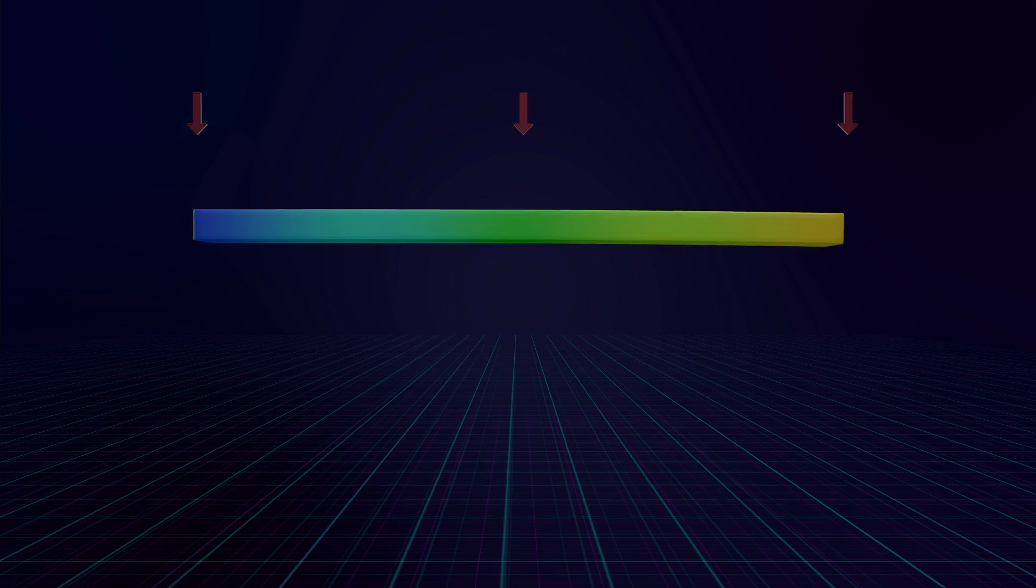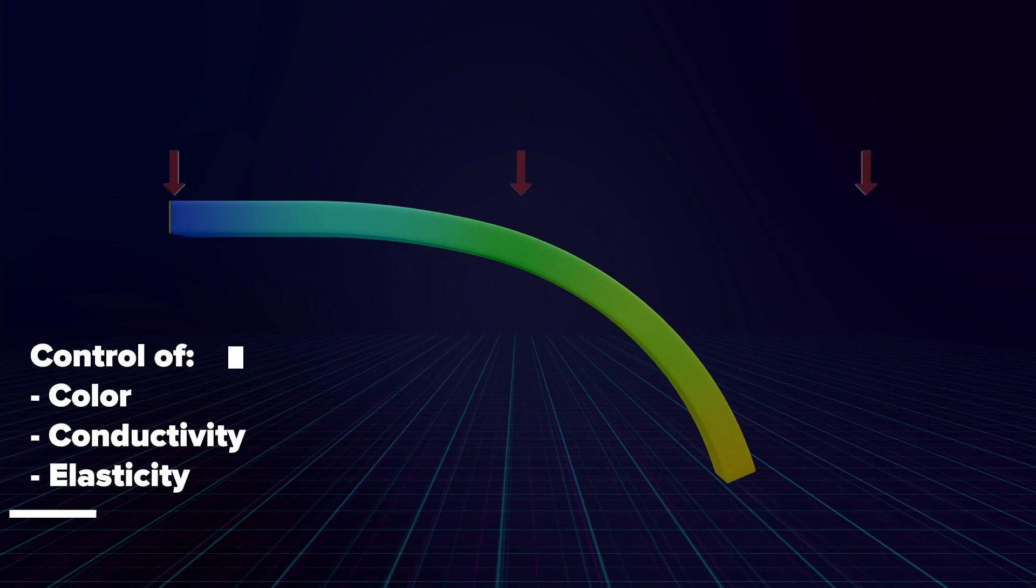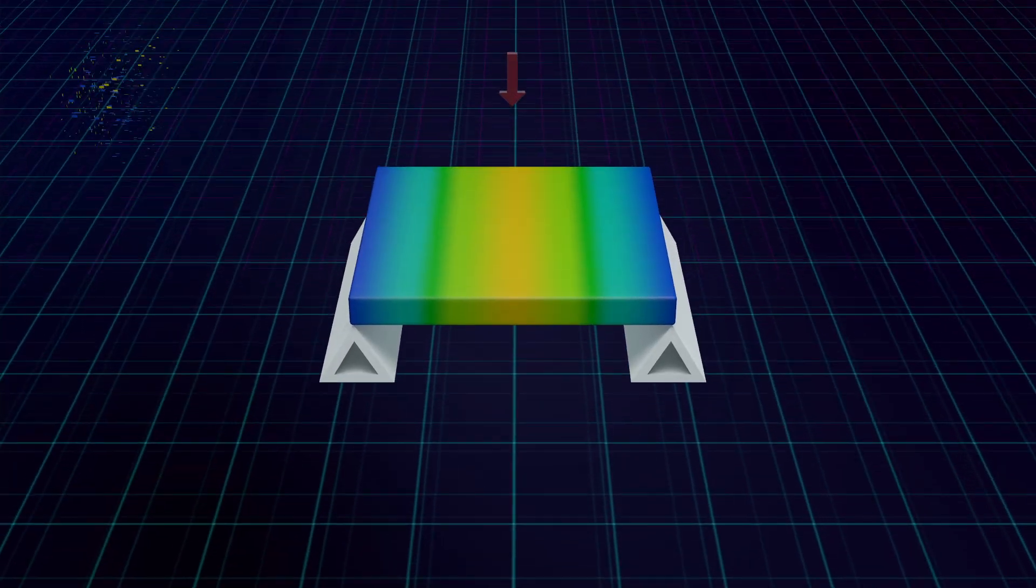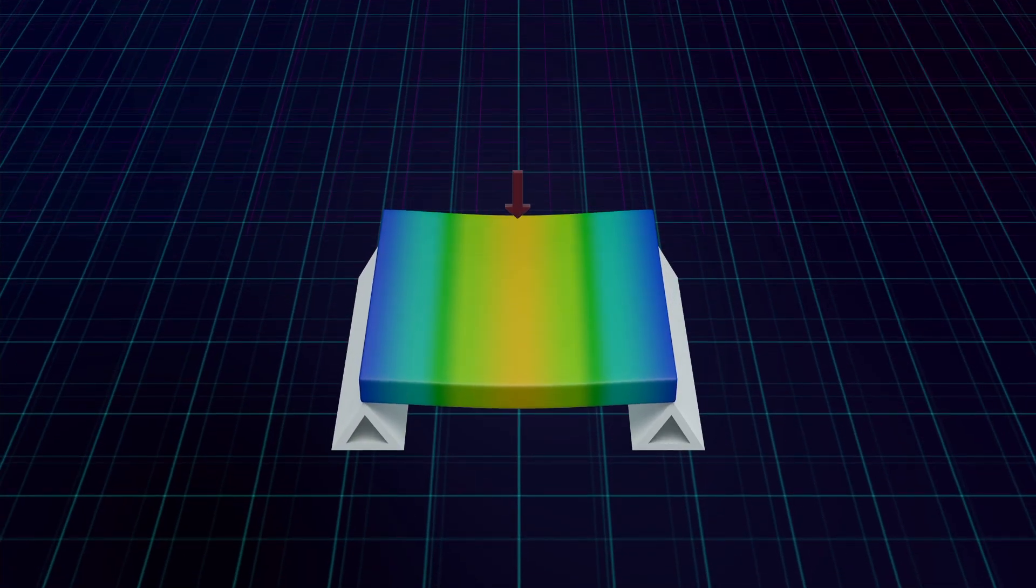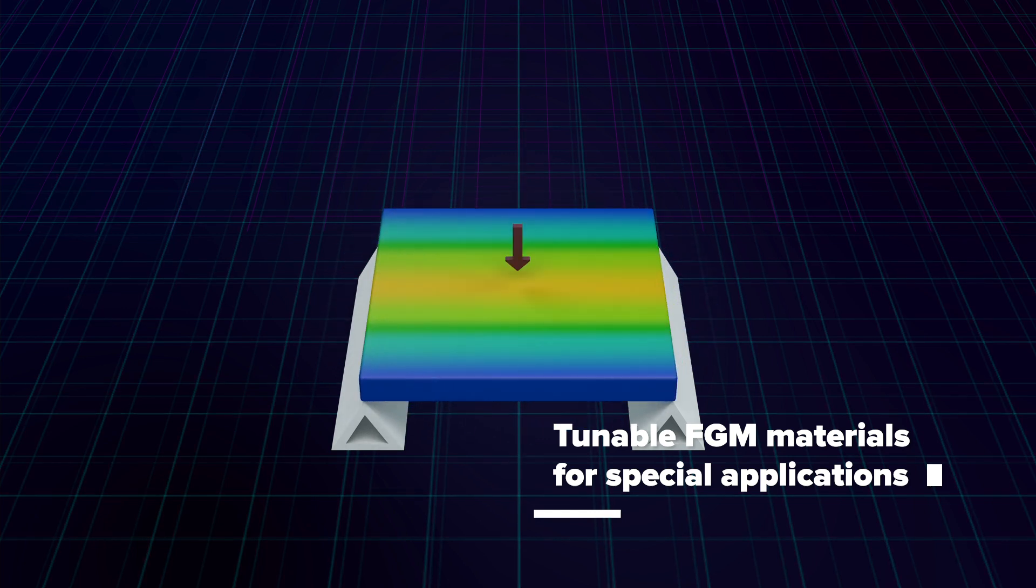This approach allows for prints with precise control of material properties such as color, conductivity, or elasticity by an online change in ink ratio. This way, functionally graded materials can be produced for special applications.